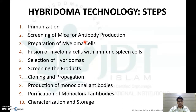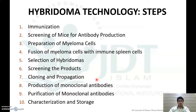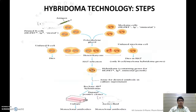The production of hybridoma technology involves ten steps: immunization, screening of mice for antibody production, preparation of myeloma cells, fusion of myeloma cells with immune spleen cells, selection of hybridomas, screening of the product, cloning and propagation, production of monoclonal antibody, purification of monoclonal antibody, and characterization and storage of monoclonal antibodies.